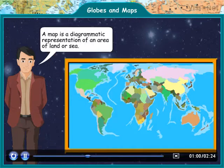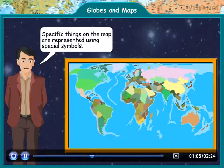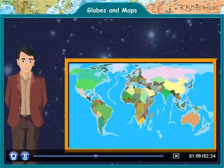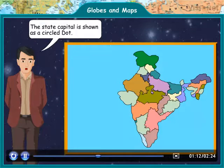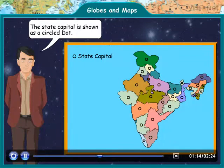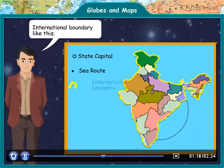A map is a diagrammatic representation of an area of land or sea. Specific things on the map are represented using special symbols. For example, the state capital is shown as a circled dot, while a sea route or international boundary is shown like this.